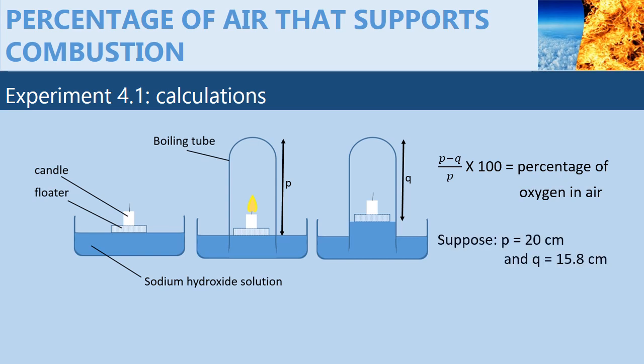Now suppose p is 20 centimeters while q is 15.8 centimeters. The percentage of oxygen used up by the burning candle is calculated as follows: (20 - 15.8) / 20 × 100, giving us 21 percent.